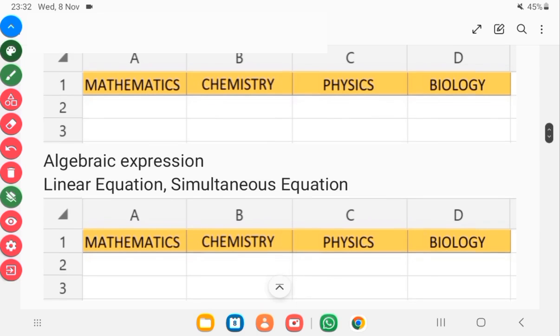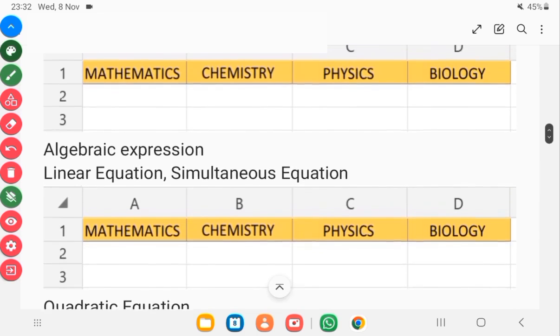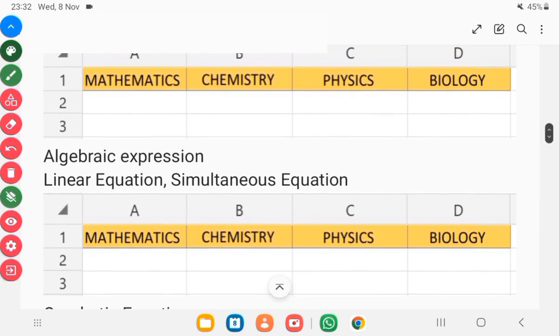The next area to give attention to is the algebraic expression. With algebraic expression, it has to do with mathematics involving variables. You need to be a master of linear equations, simultaneous equations, and those will help in mathematics, chemistry, and physics as well.